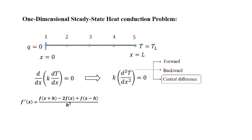Before implementing the finite difference approximation, we represent the domain using a finite number of nodes — here, five nodes, where nodes 1 and 5 are boundary nodes and nodes 2, 3, and 4 are intermediate nodes. For any node i, the neighboring nodes are i+1 and i−1. The central difference formulation for d²T/dx² in terms of temperature becomes: [T(i+1) − 2·T(i) + T(i−1)] / h². This approximation is only valid for the intermediate nodes 2, 3, and 4, not for the boundary nodes.